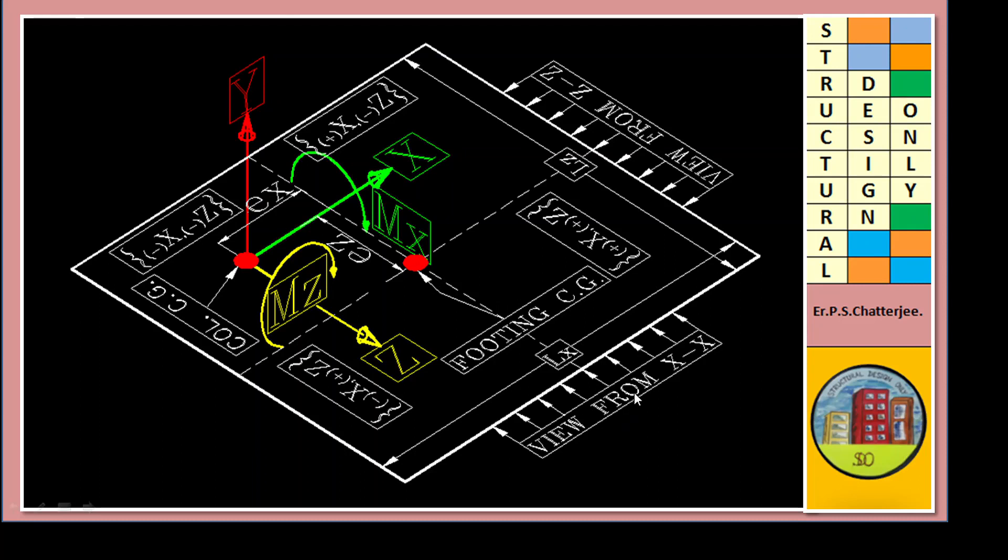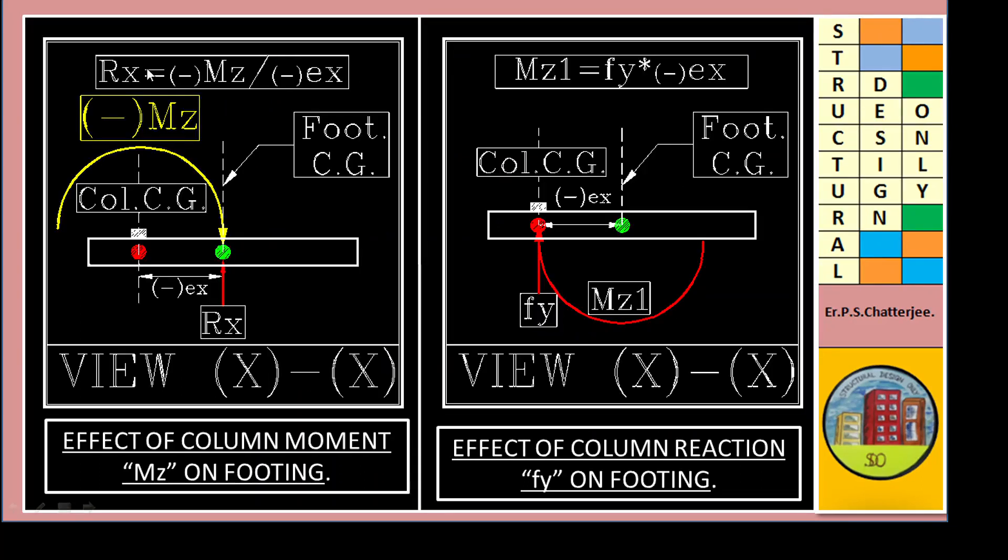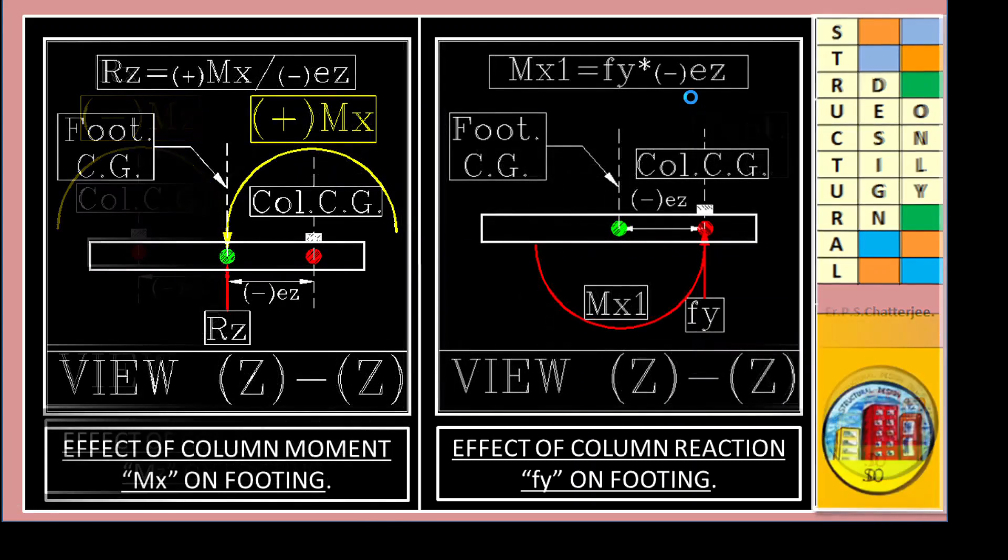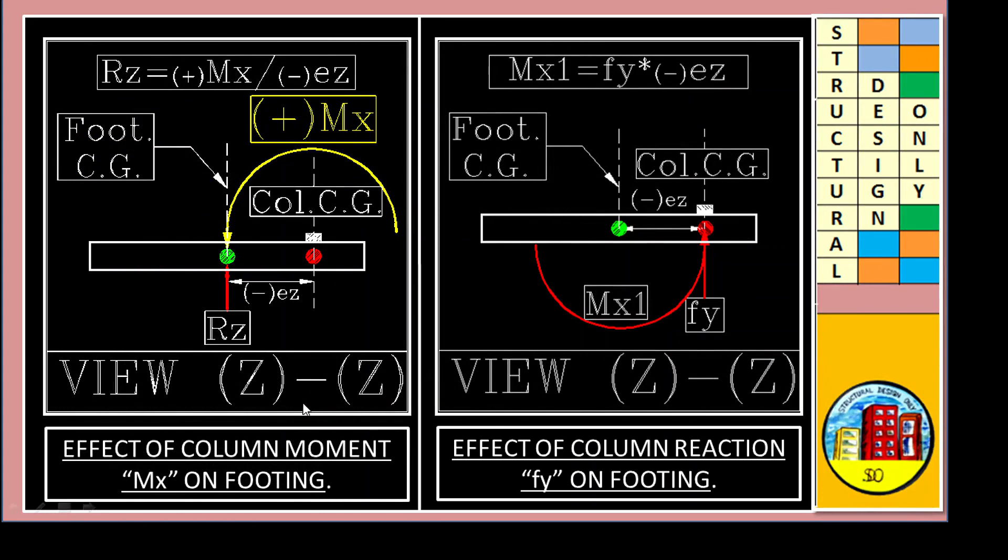When we are looking from this side, it's called view from XX and this is view from ZZ. RX equals reaction due to moment MZ equals MZ divided by EX. Here it is minus MZ and minus EX. MZ1 equals FY times EX. Similarly, this is for view from ZZ. This is moment to reaction and reaction to moment.